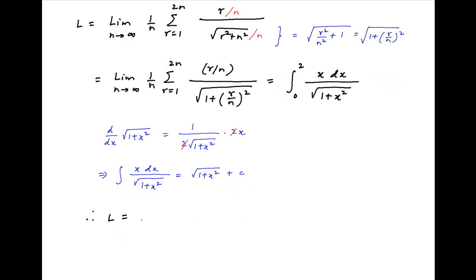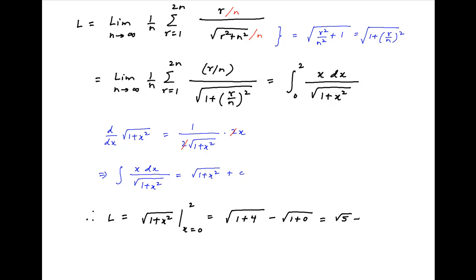Using this result in the expression for L above, L is equal to square root of 1 plus x squared, where x varies between the limits 0 and 2. This is equal to square root of 1 plus 4 minus square root of 1 plus 0, which is equal to square root of 5 minus 1, which is the required answer.